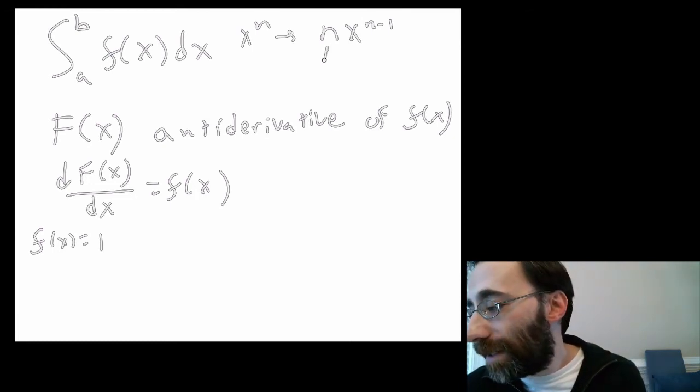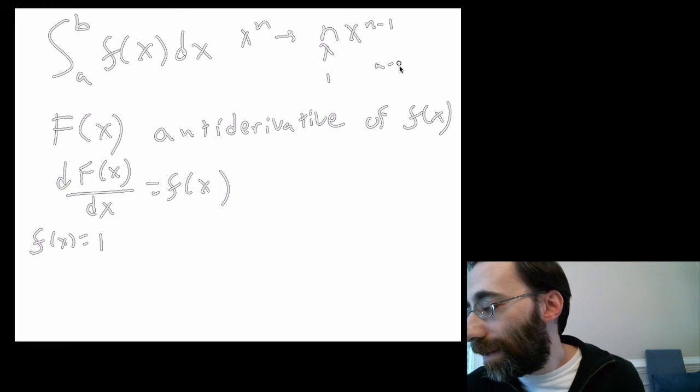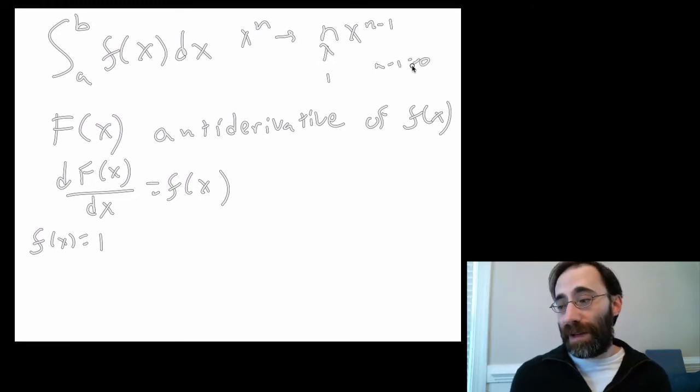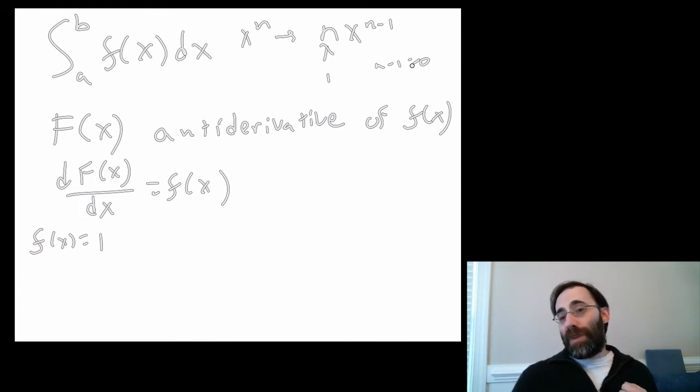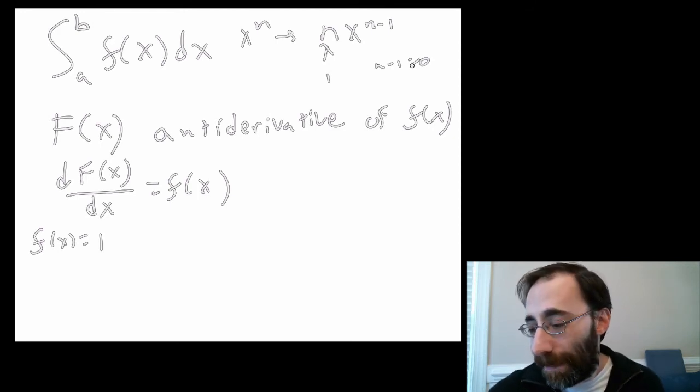Now, because this is 1, n minus 1 equals 0, x to the 0 is 1. So the derivative of x is going to be 1. So one possibility for capital F, for the antiderivative, is x. So we can write that here.